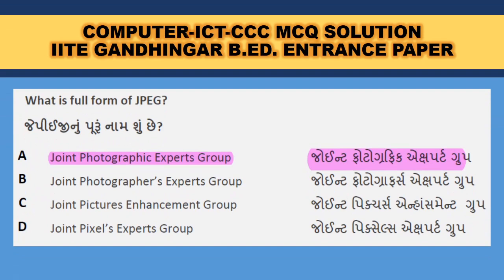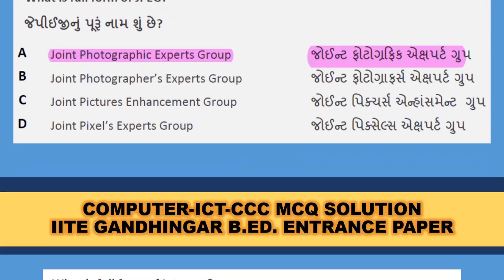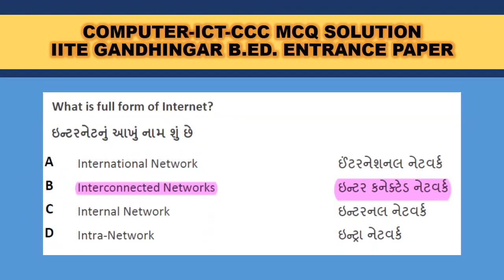What is the full form of JPG? Joint Photographic Experts Group is the correct answer. What is the full form of Internet? Interconnected Networks. Internet is nothing but the connection of many local area, metropolitan area, and wide area networks — it is the network of networks, so B is the correct answer: Interconnected Networks.